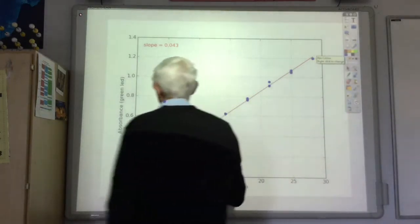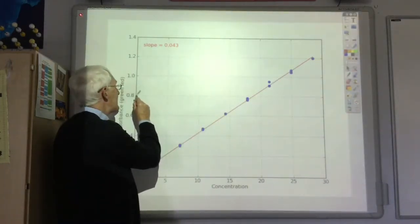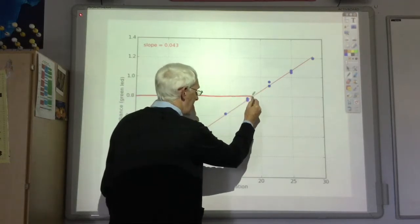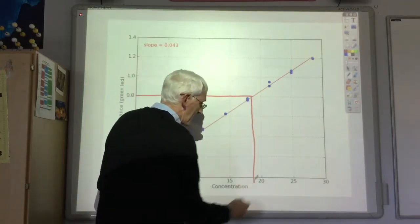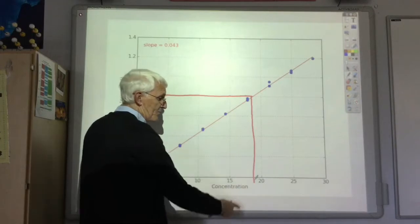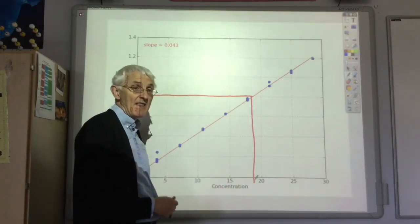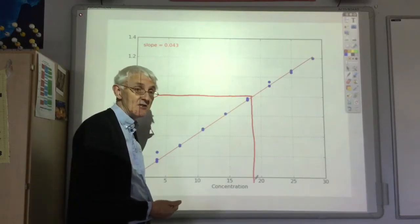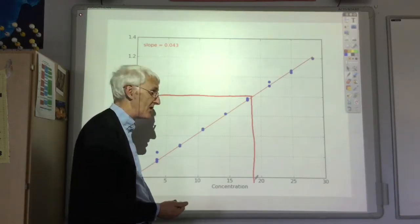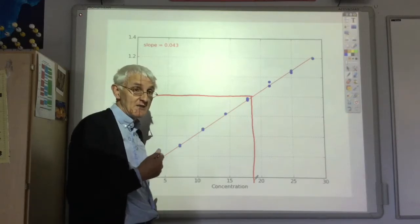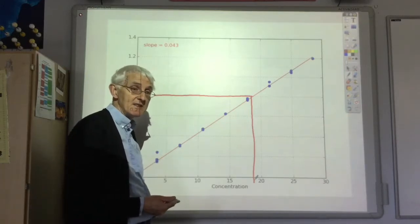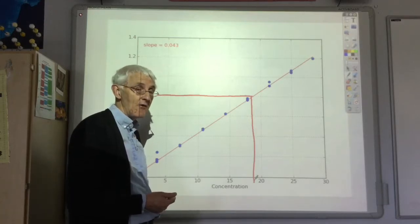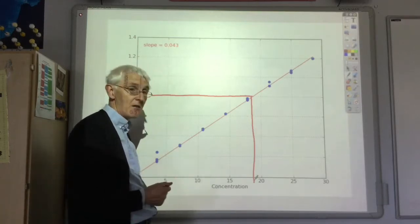So say for example we've got an absorbance of 0.8, then going across to our best fit straight line we'd find that the concentration was 19. And that's the basic theory of how we can analyze the concentration of an unknown by colorimetry. You will get a chance to do this in experiment six where you measure the manganese content of a paper clip by colorimetry.